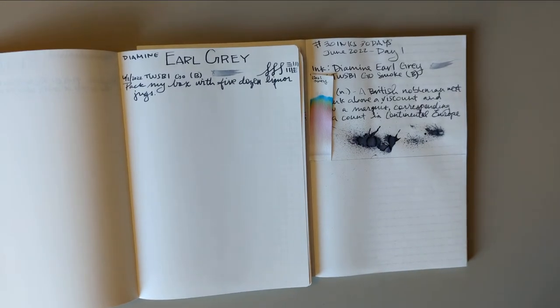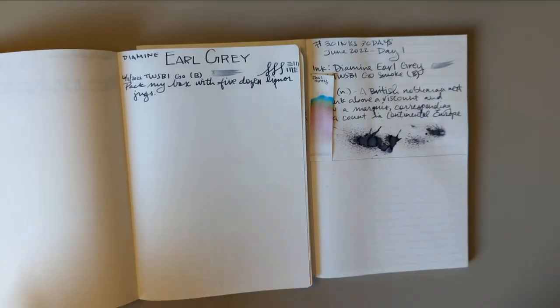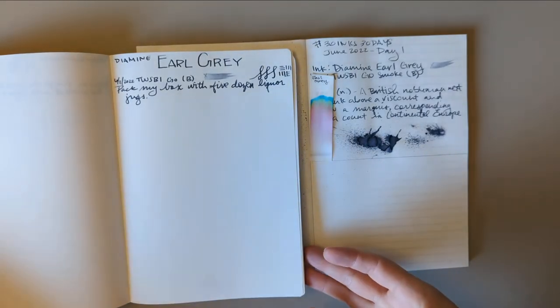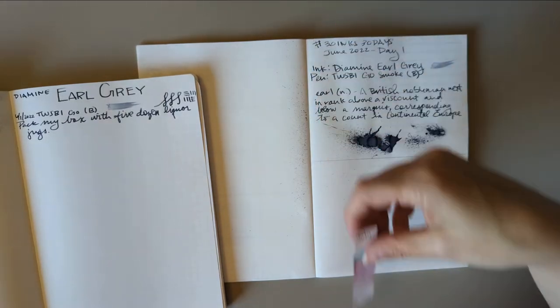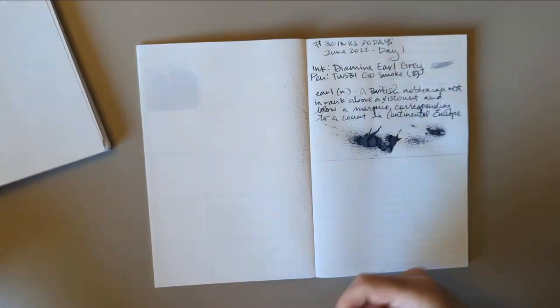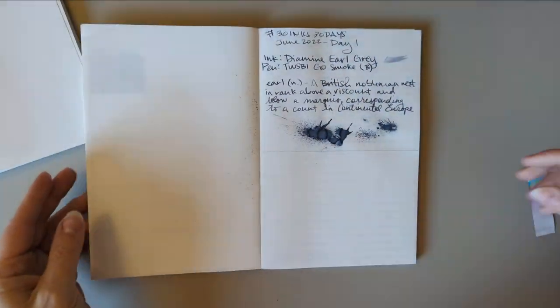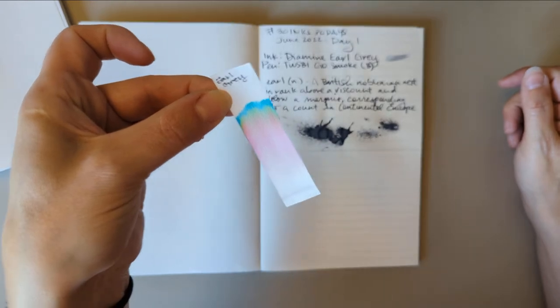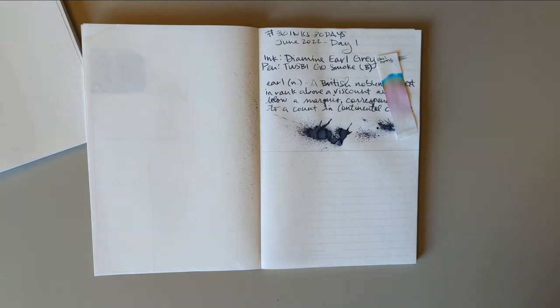Hi everybody, 30 inks 30 days, day two. At least we're going to a second day. Yesterday was Earl Grey in my Twsbi Go, which I left somewhere else. That's what it looks like all dry - it's got some good shading. I decided because it's a really neat color to do the chromatography for it. That's what that looks like, and I might do chromatography for all of them.